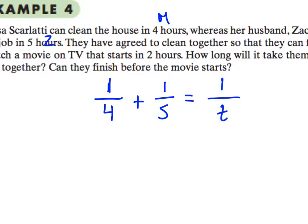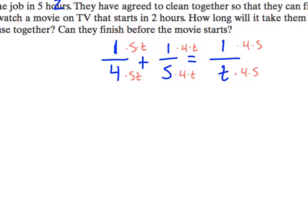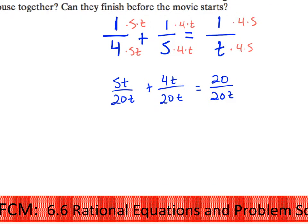All right, so hopefully you paused the video and tried it for yourself. So if we find a common denominator, it's going to be 5 times 4 times T. So this far right side needs to be multiplied by 4 and 5. The middle fraction needs 4 and T, and the right side needs 5 and T. So we end up with 5T over 20T plus 4T over 20T equals 20 over 20T. And our denominators are the same, so they get crossed out only in equations.